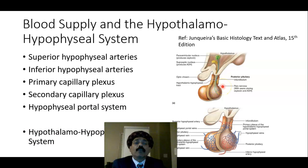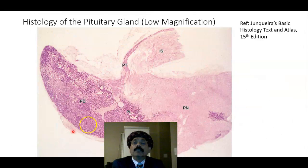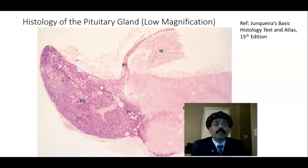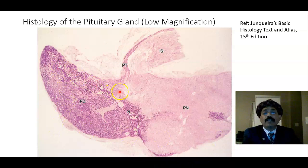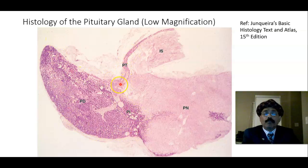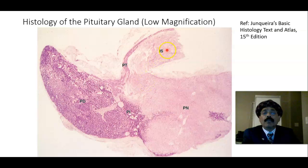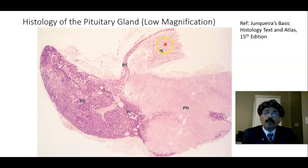The pituitary gland is also called the master gland, and also called the hypophysis. This is a histological section slide of the pituitary gland at low magnification. We have the pars distalis — part of the anterior pituitary or adenohypophysis — the pars intermedia, and the pars tuberalis. This is the nervous tissue; this is the infundibular stalk, and this is the pars nervosa. These are derived from the neuroectoderm from the floor of the hypothalamus.